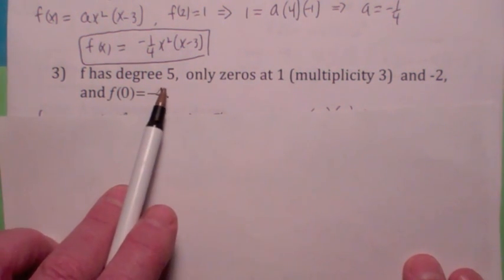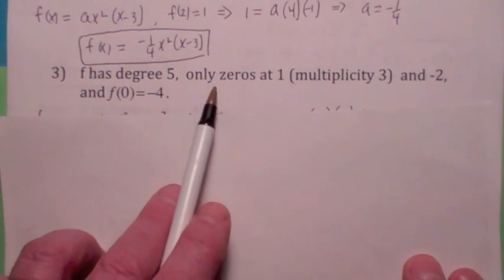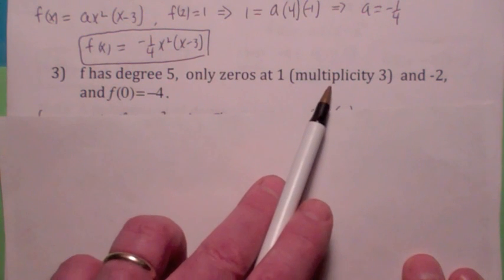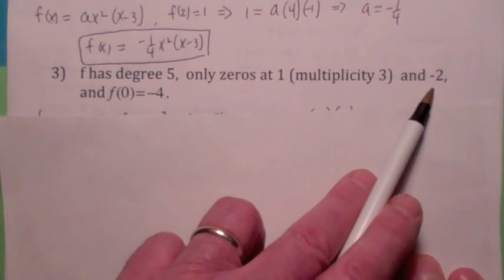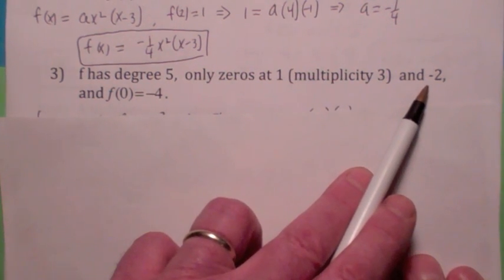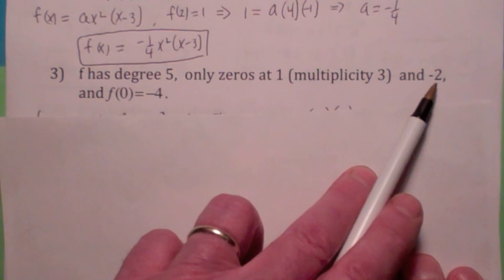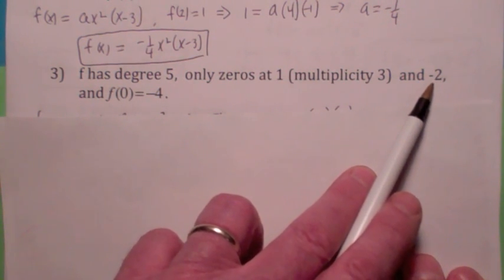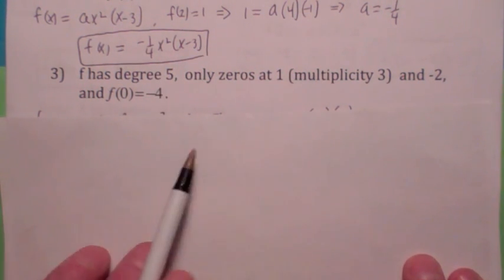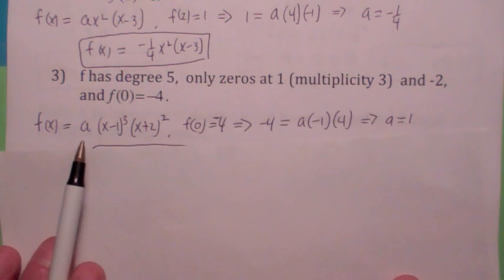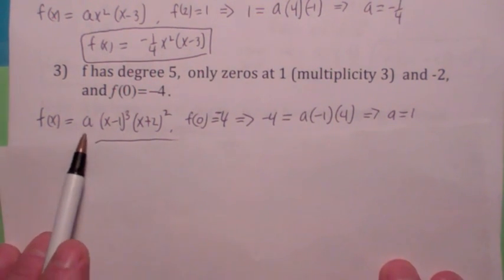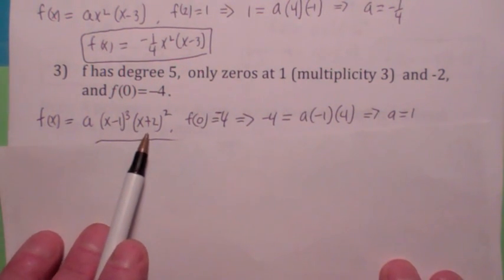f has degree 5. Okay, degree 5 polynomial. The only zeros are at 1, multiplicity 3, and it has a 0 at negative 2. What would the multiplicity have to be there? It would have to be 2, wouldn't it? Because the degree is 5. So, and f(0) = -4. So you start off like this.